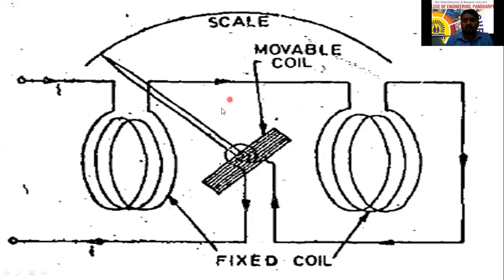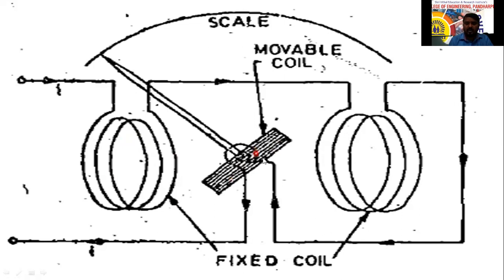This is the construction of the electrodynamometer, also called electromagnetic dynamometer. It has two coils: one fixed and one moving. The fixed coil is split into two equal parts. Between those two halves is placed the moving coil, which is attached to the spindle connected to the pointer showing the reading.